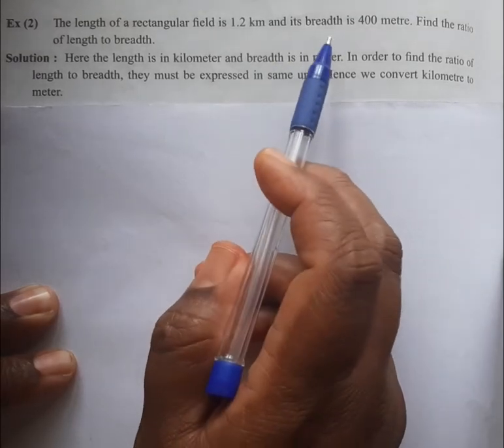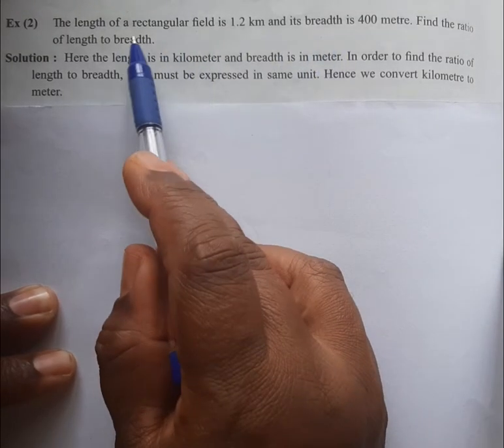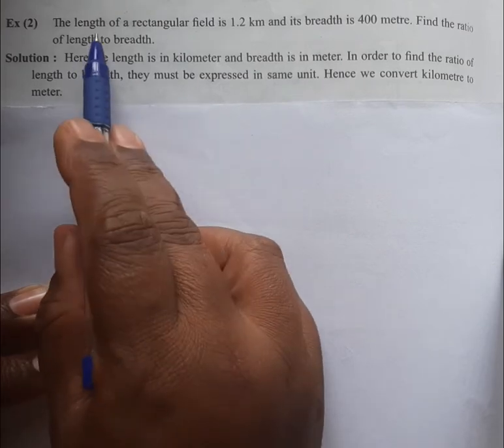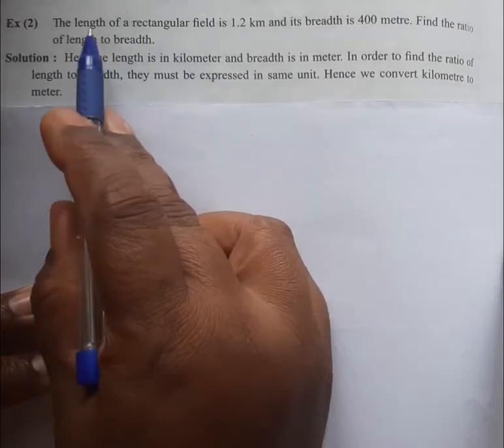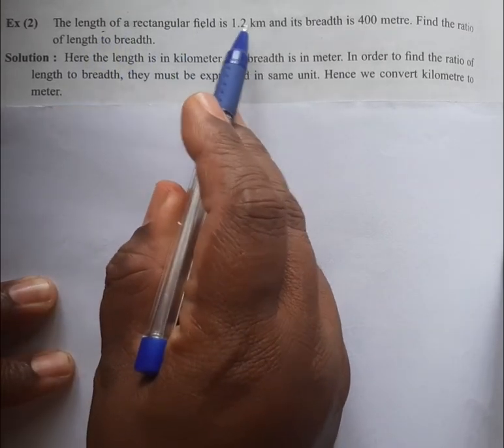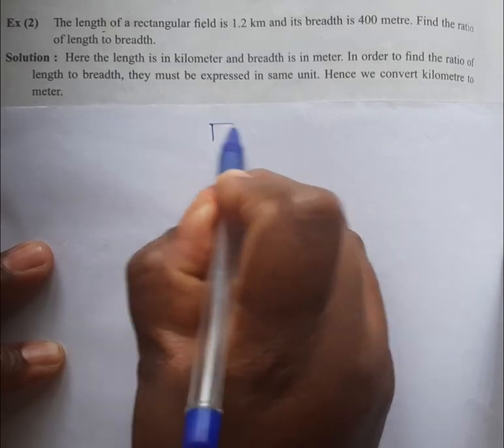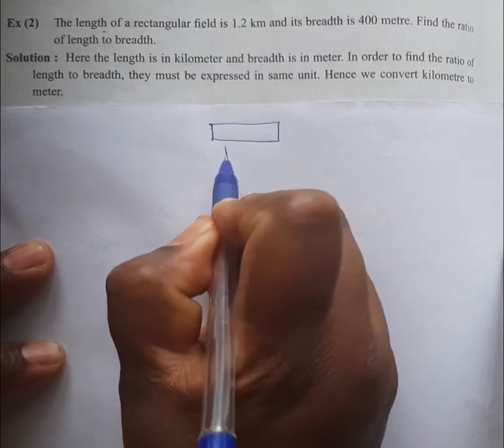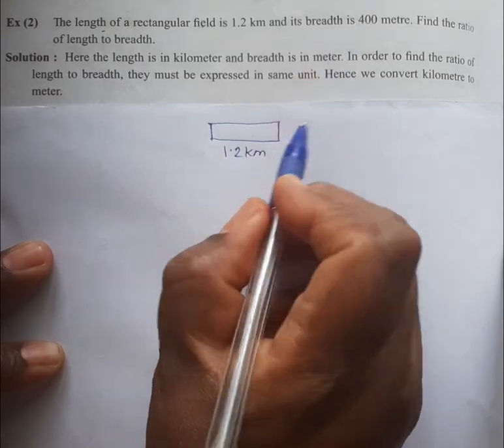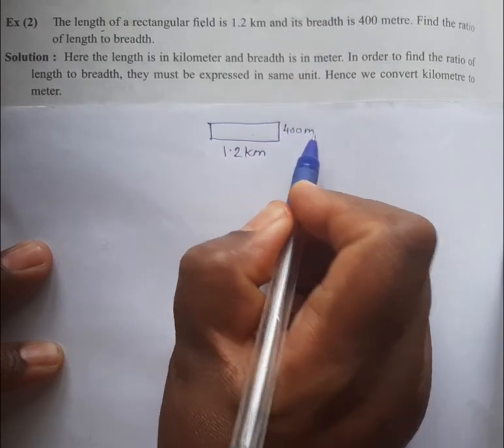Hello everyone, today we will study a problem based on ratio and proportion. I have taken a word problem. The length of a rectangular field is 1.2 kilometers and its breadth is 400 meters.